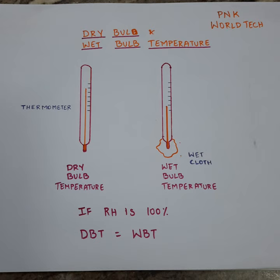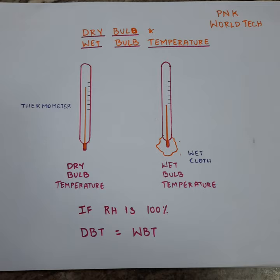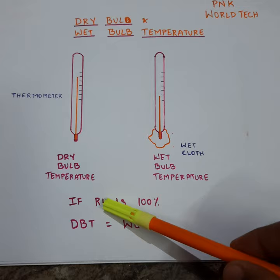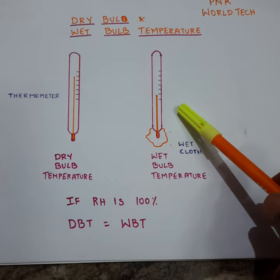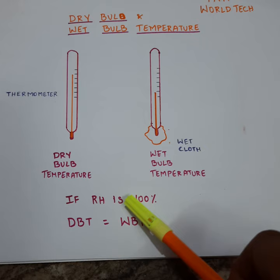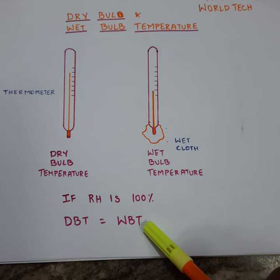This exercise helps us to estimate the relative humidity of air. If the relative humidity is high, the difference between dry bulb temperature and wet bulb temperature will decrease. So if the relative humidity is 100%, we can say that dry bulb temperature is equal to wet bulb temperature.